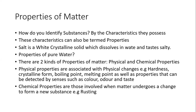Physical properties also include things you can observe with your senses: the color, odor, and taste. Chemical properties involve matter undergoing changes to form new substances. An example of a chemical property is rusting, where iron undergoes change to form iron oxide.